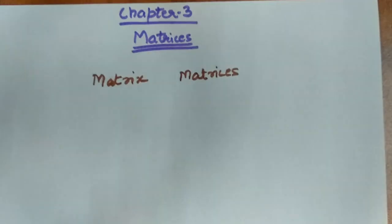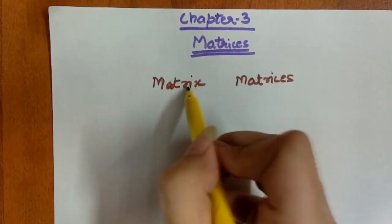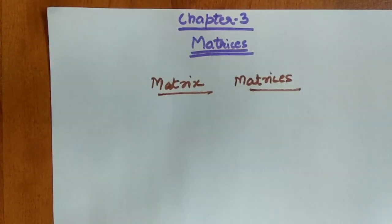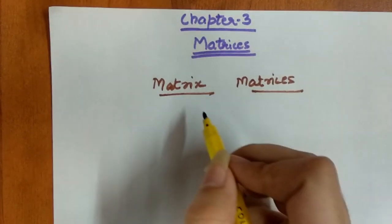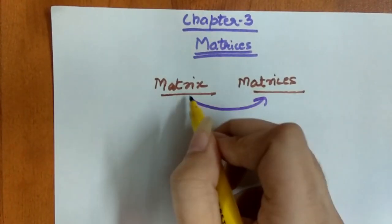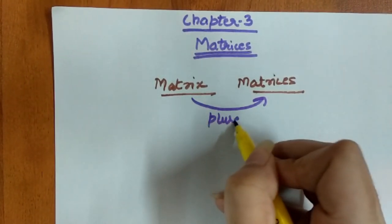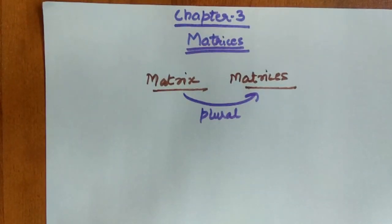Students are confused about whether the name is 'matrix' or 'matrices.' I would like to clear this: matrix and matrices are both similar, there is no difference. 'Matrix' is the singular form and 'matrices' is the plural. When there is a single one, we call it a matrix, and when there are multiple, we call them matrices.